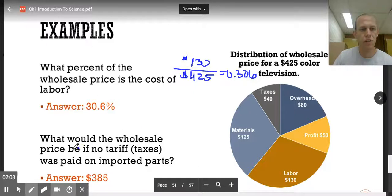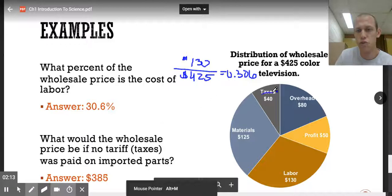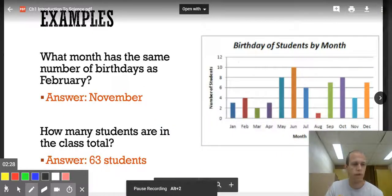What would be the wholesale price if no tariff taxes was paid on imported goods? So if we refuse to pay the taxes, which was $40, that would just be $425 minus that $40, which would give us $385, which is what we have down there.